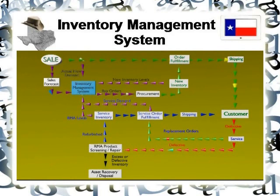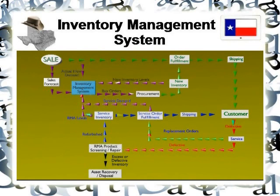Let's talk about the different colors as far as the different paths go. You'll notice there are some lines that are green, some that are purple, blue, red, and black. Starting with the green ones — this is the primary flow of product, basically from sales to order fulfillment, shipping straight to the customer. The purple lines going in and out of the inventory management system represent the data flow.